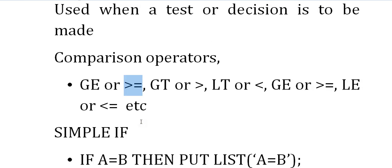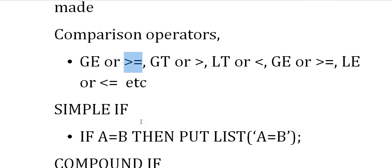Let's see a simple if statement. If A equals B, then put list 'A=B'. You will be writing: if this condition is satisfied, then you will be writing a set of statements and you'll be ending with a semicolon.